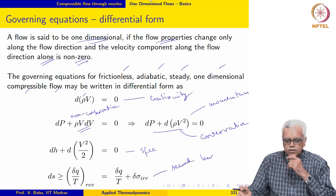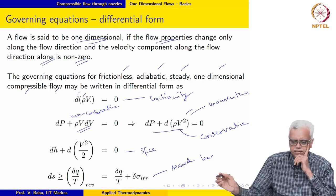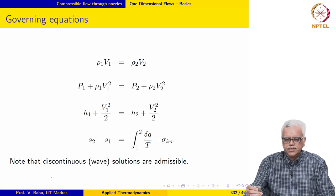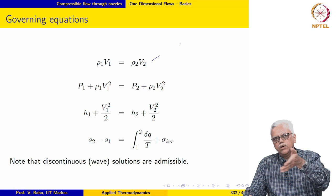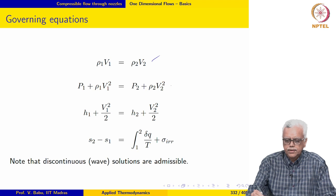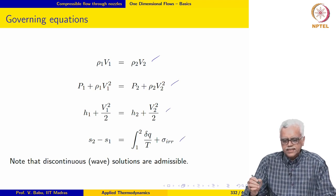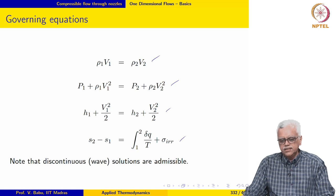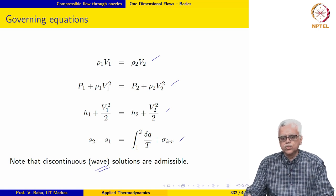Because all these equations are perfect differentials, we may actually integrate them and write them as rho₁V₁ = rho₂V₂, integrating between station 1 and station 2. One interesting aspect, which is not very clear on the face of it, is that discontinuous or wave-like solutions are also admissible.